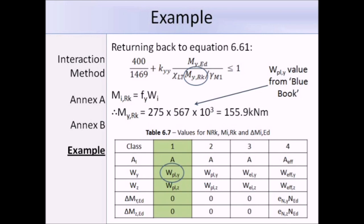Continuing on with equation 6.61, we need to work out the value of MYRD, so we refer to table 6.7. Since we have a class 1 section, we are going to use the plastic modulus, which is 567 times 10 to the power of 3, and you get that from the blue book. The yield strength is 275, and we get MYRK equal to 155.9 kNm.